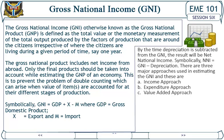Symbolically: GNI = GDP + X − M, where GDP equals gross domestic product, X equals exports, and M equals imports. By the time depreciation is subtracted from the GNI, the result will be net national income. Symbolically: NNI = GNI − depreciation. There are three major approaches used in estimating the GNI: the income approach, the expenditure approach, and the value-added approach.